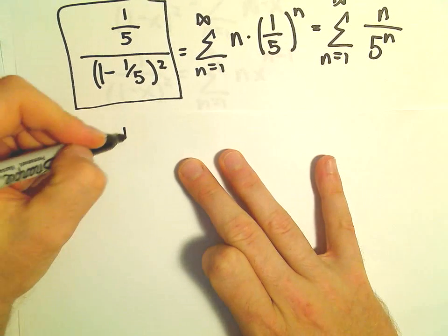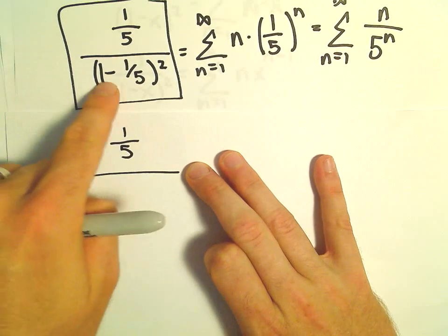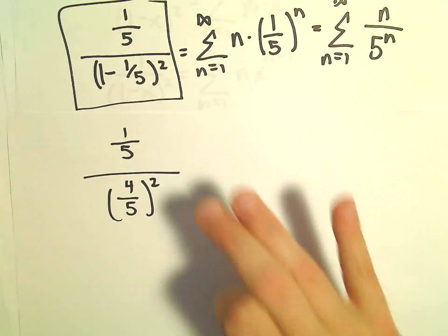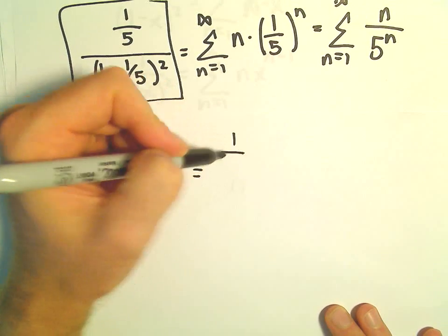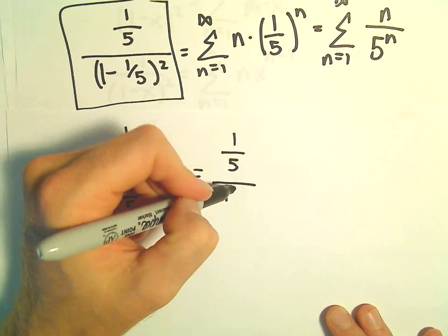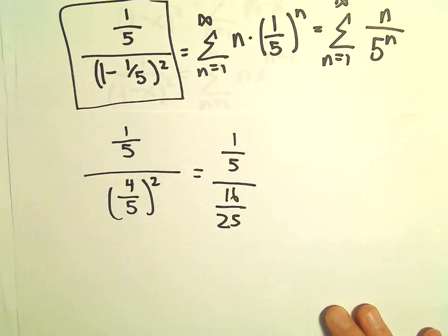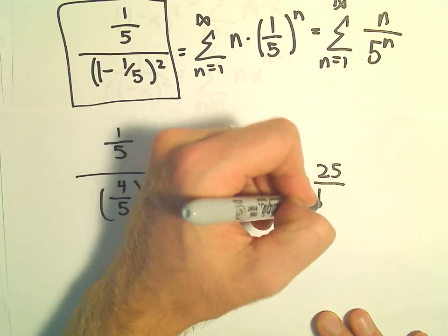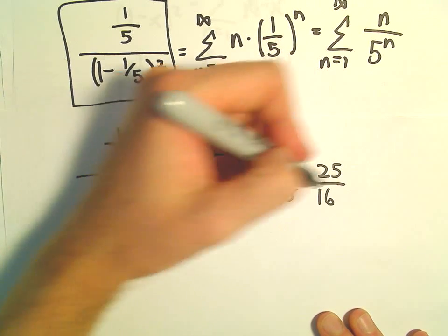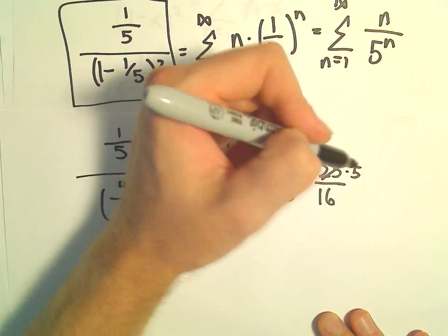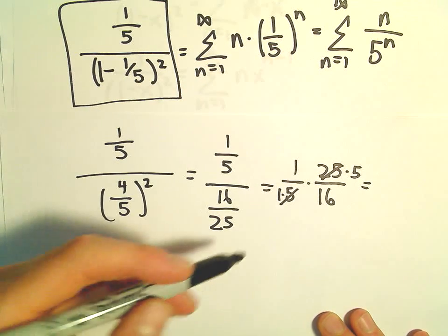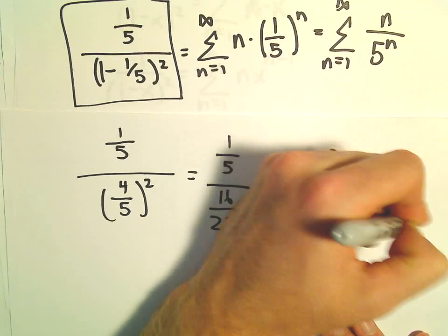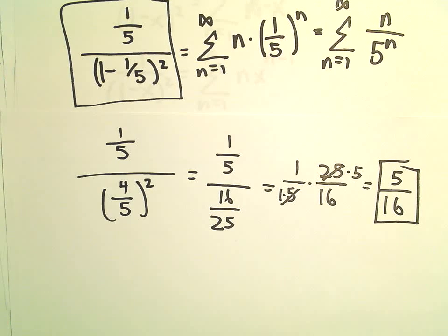So let's see, we've got one-fifth, so one minus one-fifth is going to be four-fifths. Again, that's all going to be squared. So that's one-fifth over 16 times 25. So that's going to be one-fifth times 25 over 16. Well, five goes into five once, five goes into 25 five times. So to me it looks like we're going to be left with the value 5 over 16 as our solution.